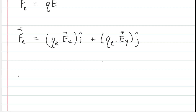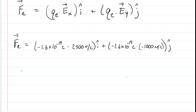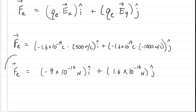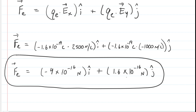Let's go ahead and plug in the known values. Notice the charge on an electron is negative 1.6 times 10 to the minus 19th coulombs. When we simplify this in the x-direction, we get negative 4 times 10 to the minus 16th newtons, i-hat. And then in the y-direction, we work that out and we get a positive 1.6 times 10 to the negative 16th newtons, j-hat. Here is the unit vector answer for the electric force acting on the electron.